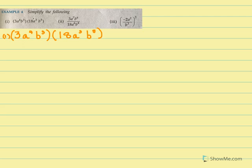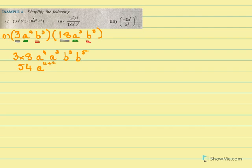Simplify: 3A raised to 4, B raised to 3, into 18, A raised to 3, B raised to 5. So we put the similar terms together — 3 and 18 together, the A terms together, and the B terms together. So we will have 3 into 18, A raised to 4 and A raised to 3 together, B raised to 3 and B raised to 5. 3 eighteens are 54. Using our law, we add the powers: 4 and 3 gives A raised to 7, and 3 plus 5 gives B raised to 8. So this is 54, A raised to 7, and B raised to 8.